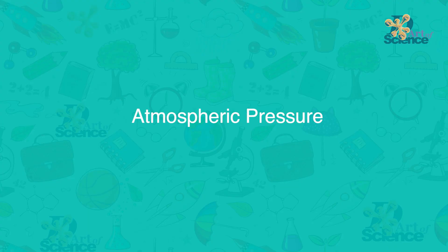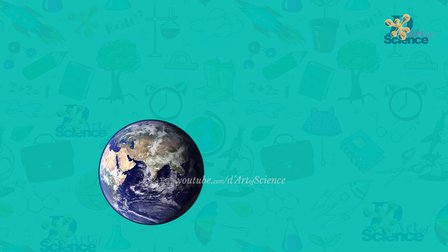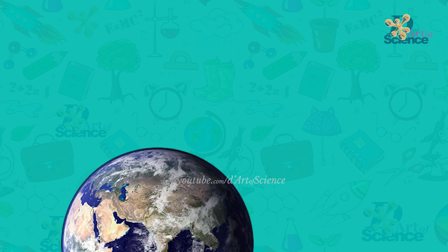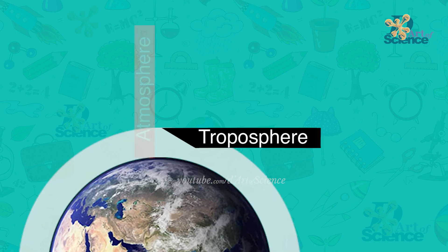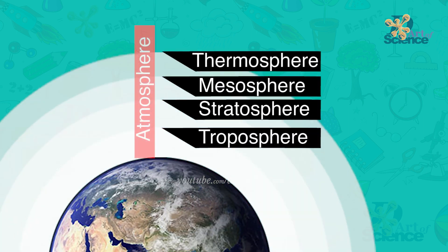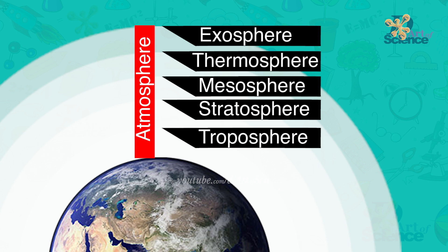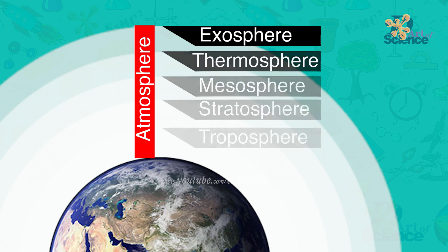Atmospheric pressure. When we stand on the earth and see the sky above, the entire layer of air above the earth up to about 300 km in height is called the atmosphere.